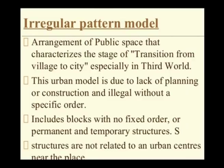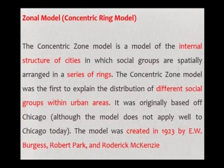The irregular pattern model refers to the arrangement of public space that characterizes the stage of transition from village to city, especially in the third world. This urban model is due to lack of planning or construction that is even illegal without a specific order — it can be considered organic, as these patterns emerge without any predefined plans. It includes blocks with no fixed border, and permanent and temporary structures that are not related to an urban center near the place.